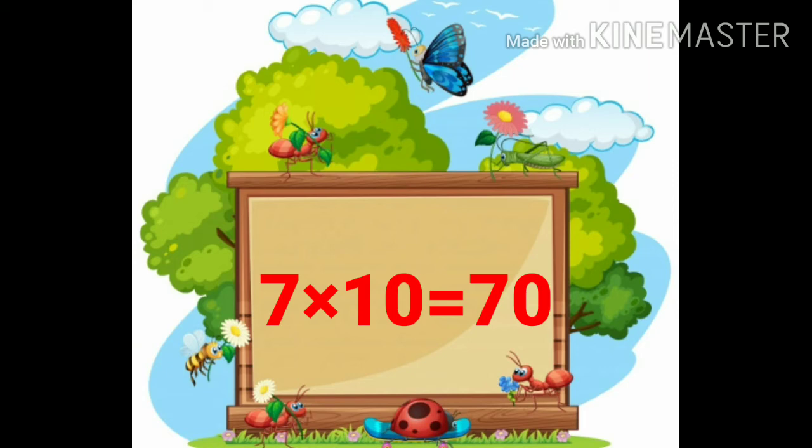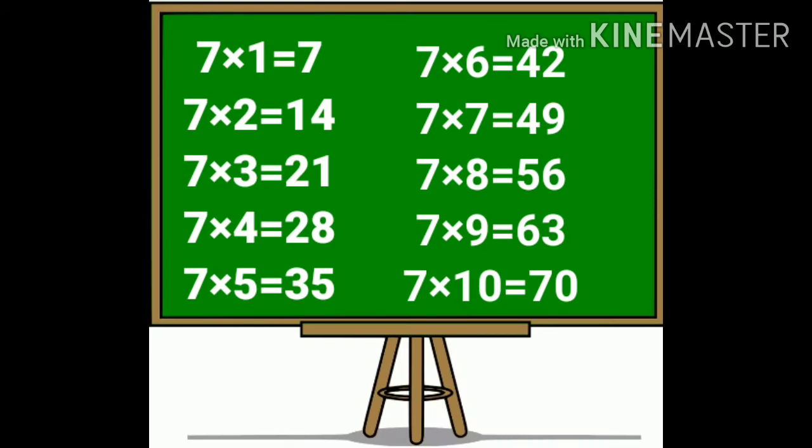Again we learn the table of 7. 7 1's are 7. 7 2's are 14. 7 3's are 21. 7 4's are 28.